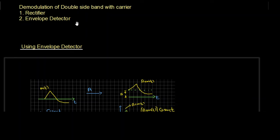Bismillahirrahmanirrahim. Assalamu alaikum. Welcome to Technically Explained. In this lecture we are going to study the demodulation of double side bandwidth carrier. There are two methods of demodulation of double side bandwidth carrier: one is using a rectifier and the other is using the envelope detector. In this lecture we are going to use the method of envelope detector.